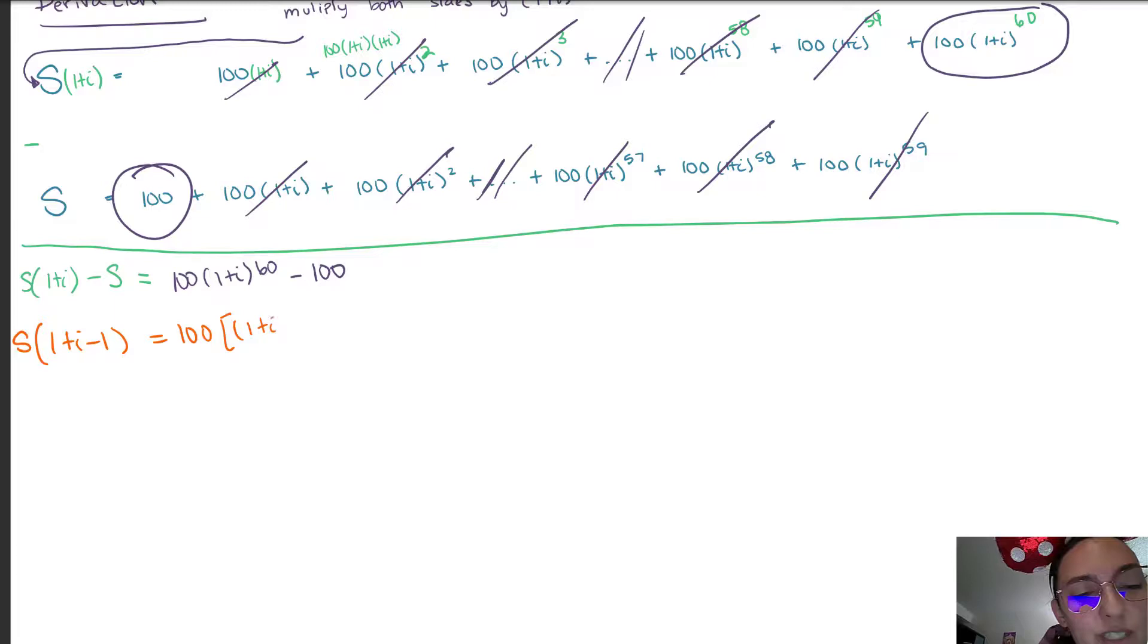We're going to now simplify both sides of this equation by factoring out the common factor. On the left hand side we factor out the s, on the right hand side we factor out the 100. Now I'm going to clean up the left hand side, we see that there are two terms that can be simplified or zero out, so we're going to be left with s times i. And then the right equation stays the same.